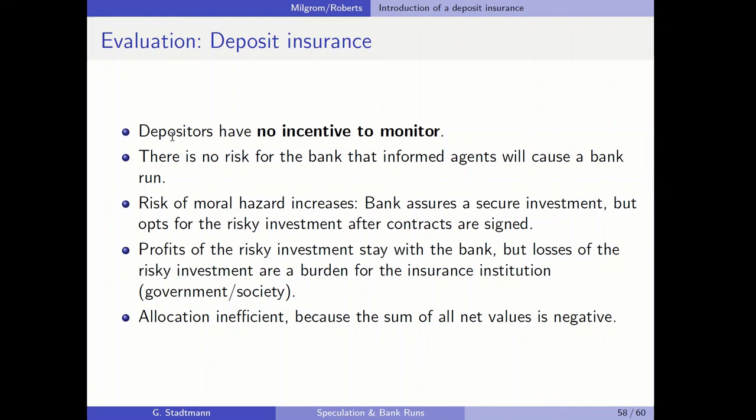The bank once more assures a secure investment but opts in the end for the risky investment after contracts are signed. The profits of the risky investment stay with the bank, but the losses are borne by the insurance institution — the government or the whole society. The allocation of capital is inefficient because the sum of all net values is negative in the insecure investment alternative.